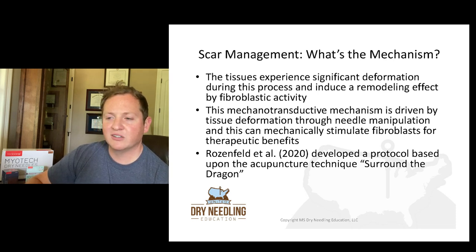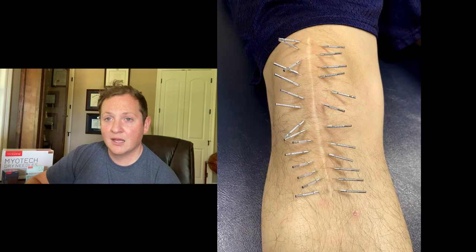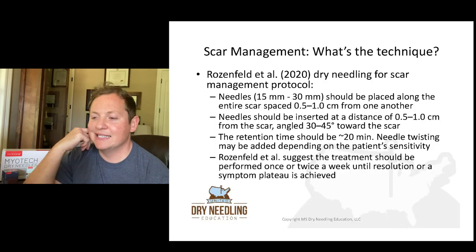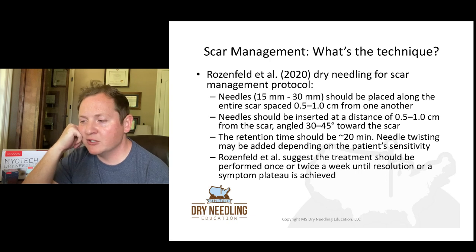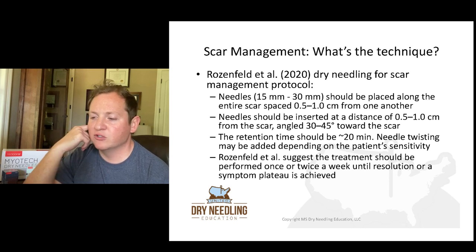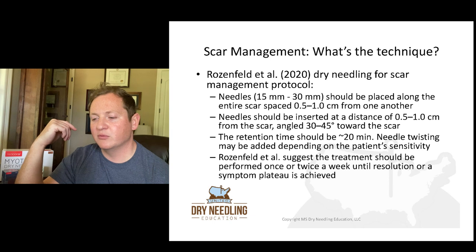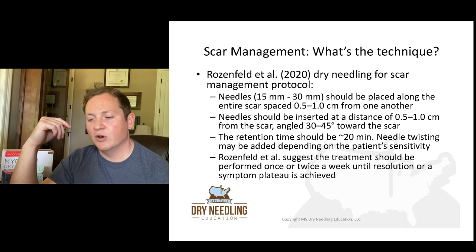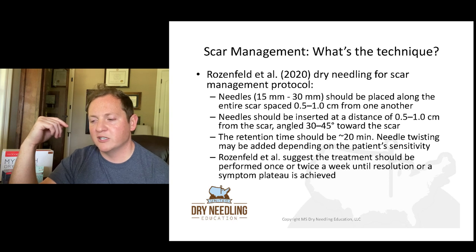Let's have a look at what surrounding the dragon looks like — yeah, that's a lot of needles. Specifically for their protocol: needles 15 to 30 millimeters should be placed along the entire scar, spaced 0.5 to 1.0 centimeters from each other, inserted at a distance of 0.5 to 1 centimeter from the scar, angled at 30 to 45 degrees toward the scar. Retention time should be around 20 minutes. Needle twisting may be added depending on the patient's sensitivity, and Rosenfield suggested treatment once or twice a week until resolution or symptom plateau.